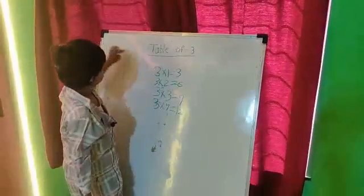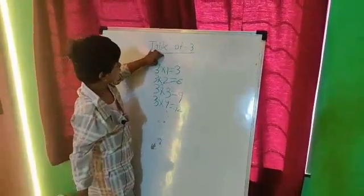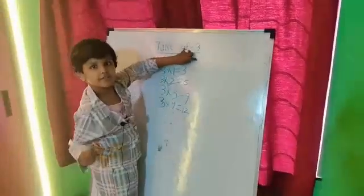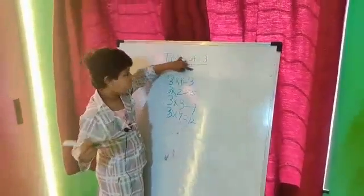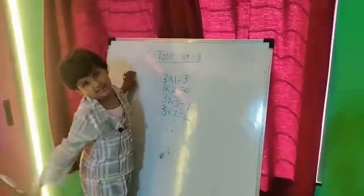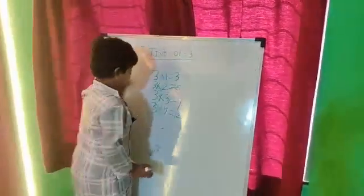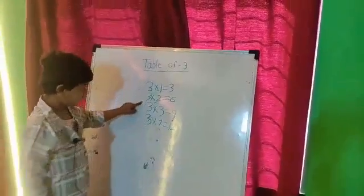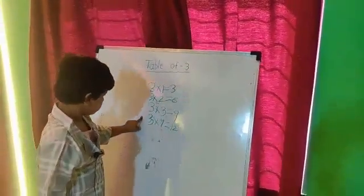Look. This is a table of 3. Look. That is original writing. So how many letters will we do? 3.